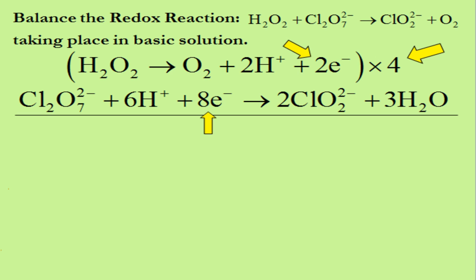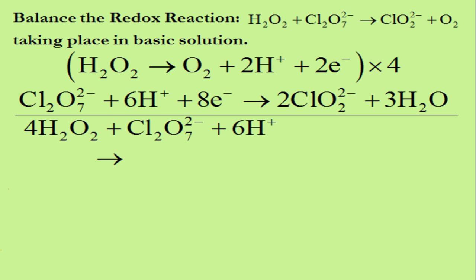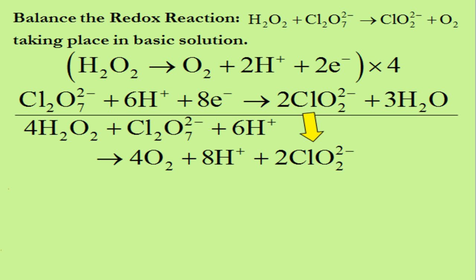We multiply everything in the top reaction by four and add the two reactions together. Adding up everything on the left side of the arrows: four times one equals four H₂O₂, one Cl₂O₇²⁻, and six H⁺ ions. Since we now have eight electrons on both sides, we can ignore the electrons. On the right side we have four times one, which are four molecules of O₂, and four times two, which are eight H⁺ ions from the top reaction, and two ClO₂²⁻ ions, and three H₂O from the bottom reaction.